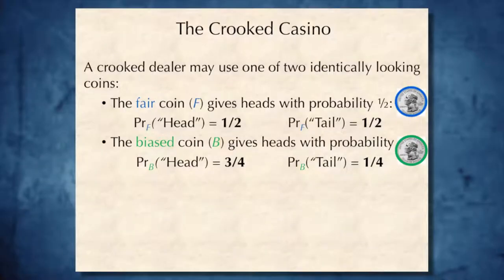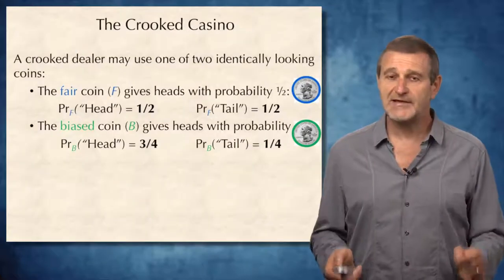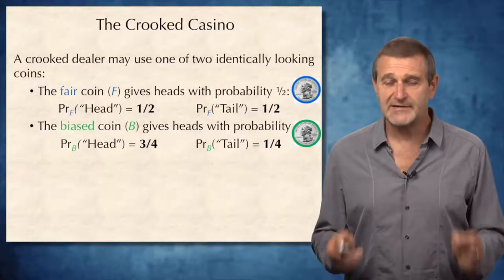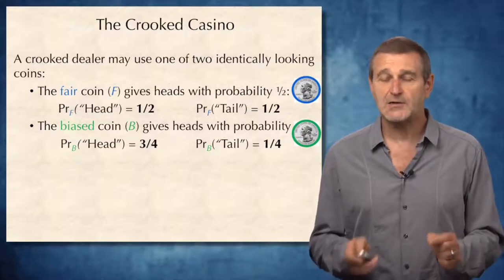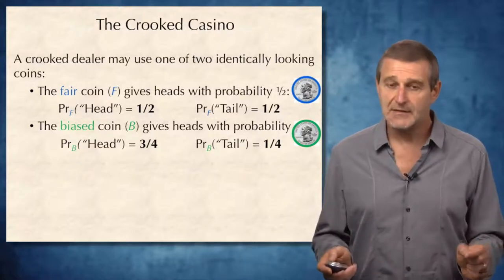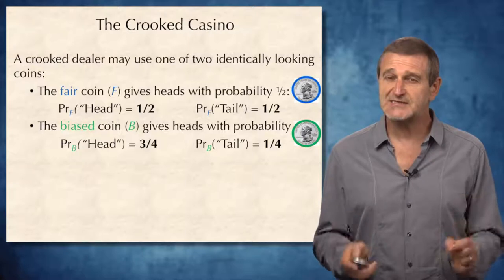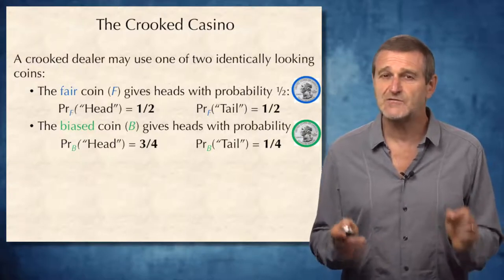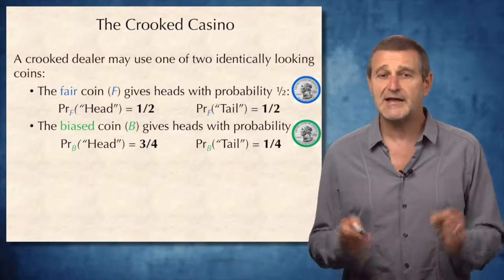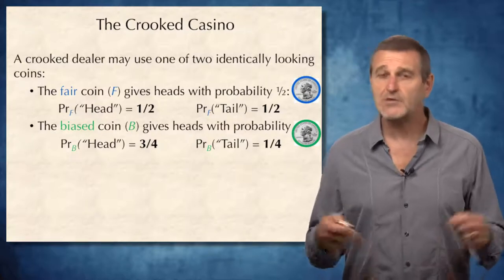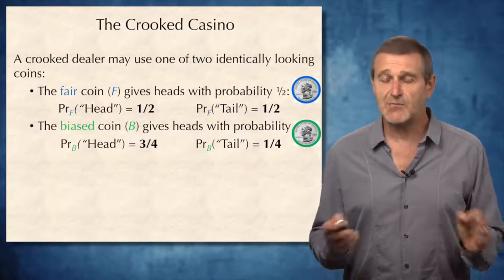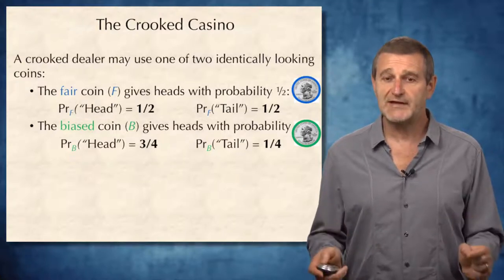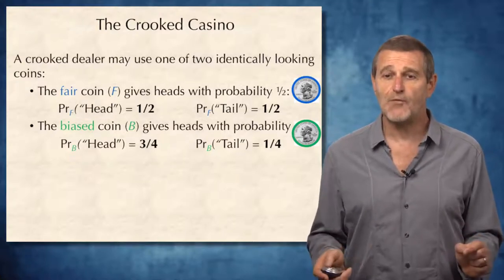We will play an equivalent game where a dealer simply flips a coin and we bet on heads or tails. The challenge is that the dealer has a choice of two coins: fair and biased. For the fair coin, the probability of heads is 1/2, and for the biased coin, the probability of heads is 3/4.